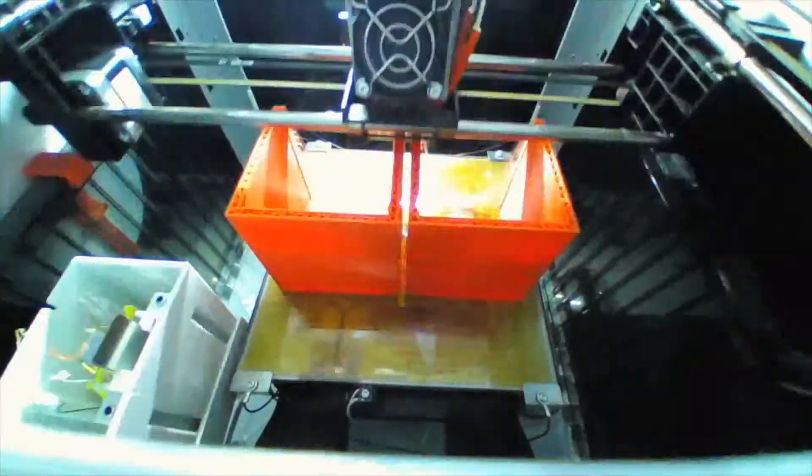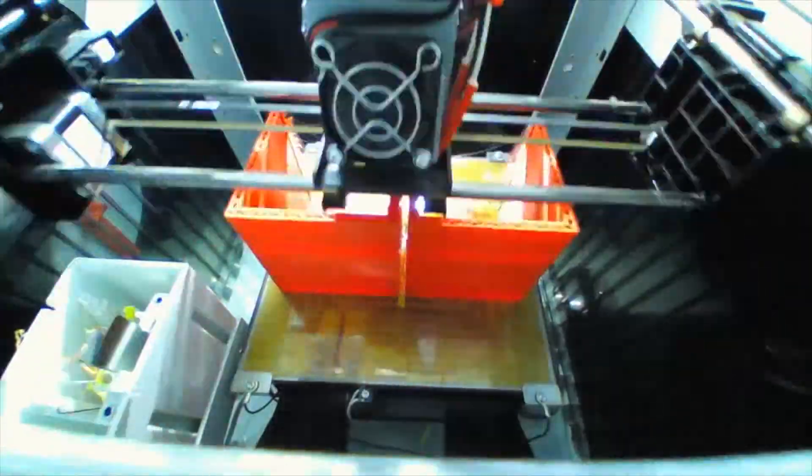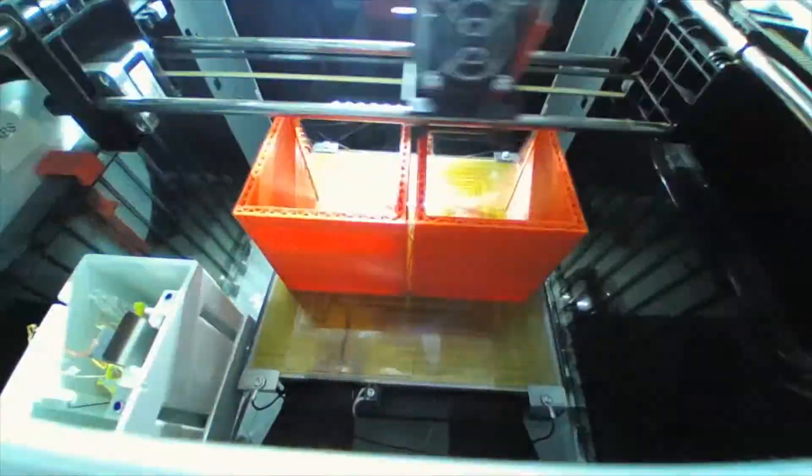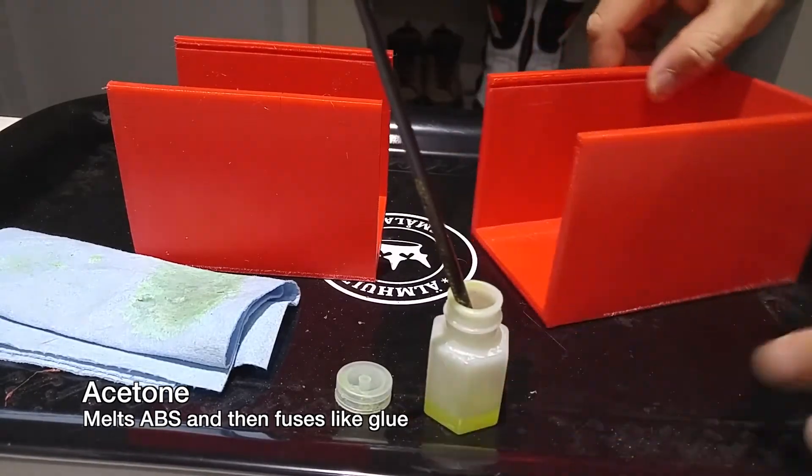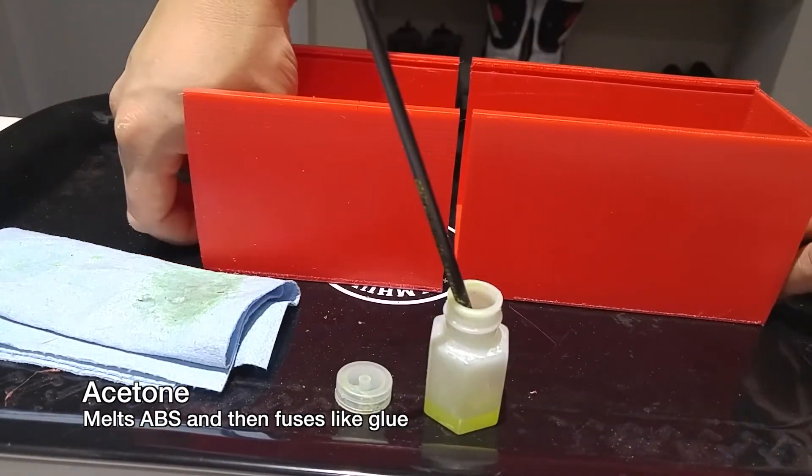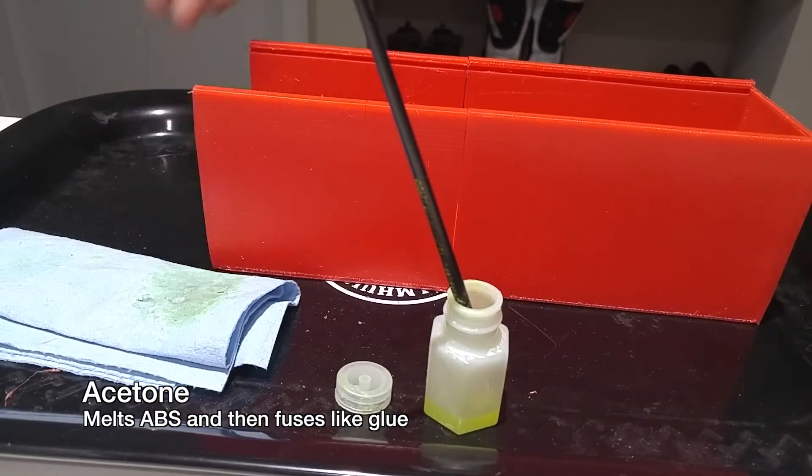I printed them at 0.2 layer height but you should be able to print them at 0.4 for faster prints. After printing, I glued them together with acetone. You could use super glue but I like to use acetone since it melts the ABS a bit and fuses the pieces together a lot better.